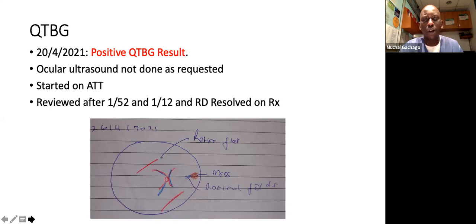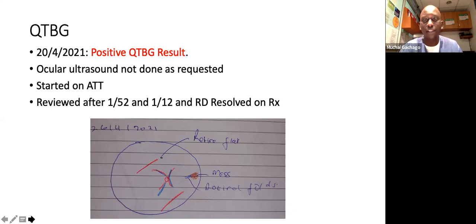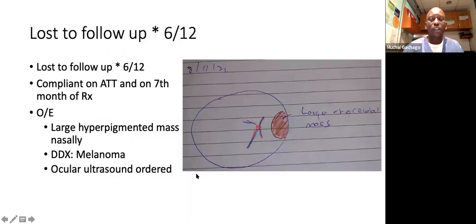Given the positive TB result, the inflammatory reaction in the eye, and the brown mass nasally with associated retinal fluid, the patient was started on anti-TB treatment. Reviewed a week later, the retinal detachment had resolved on the steroids that had initially been started along with TB treatment. As seen in the fundus photo, the retinal detachment was gone with minimal retinal folds, and a small brown mass nasally. At this point the patient felt he was doing well and was lost to follow-up, having just started his anti-TB treatment.